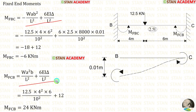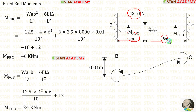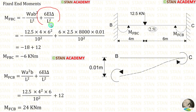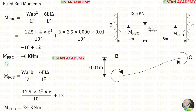Applying the values: W = 12.5, A = 4, B = 6, L = 10, δ = 0.01 m. When applying EI, we must be careful — for span BC the moment of inertia is 2.5I, so we multiply EI by 2.5, giving EI = 8000 × 2.5. The fixed end moment due to sinking is the same for MBC and MCB, so no need to recalculate. After calculations, we get MBC = −6 kNm and MCB = 24 kNm.